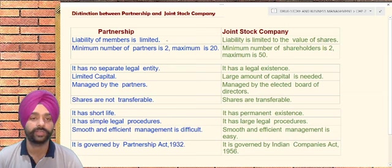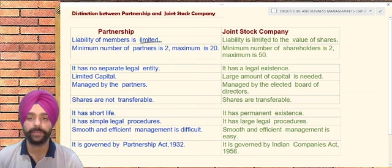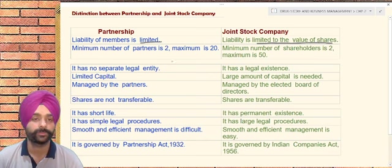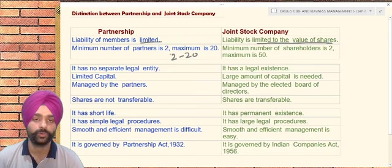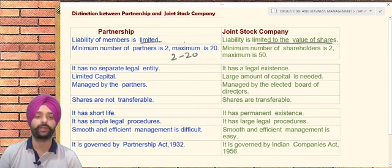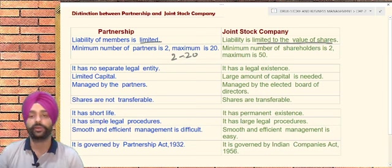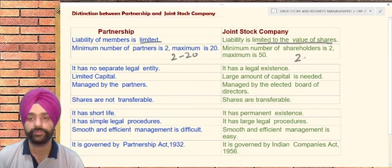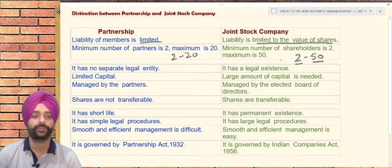Number one: the liability of members is unlimited in case of a partnership firm, but in case of a joint stock company, the liability is limited to the value of shares only. The membership range is 2 to 20 in case of a partnership firm — minimum 2 and maximum 20 persons. But for a joint stock company, the range is extended — minimum 2 and a maximum of 50 persons.